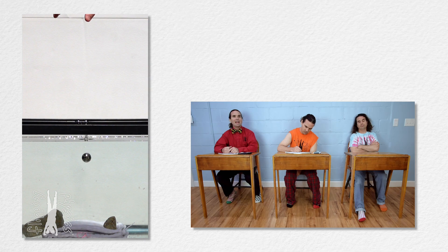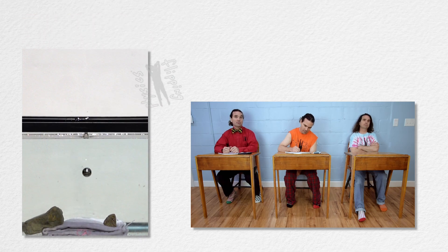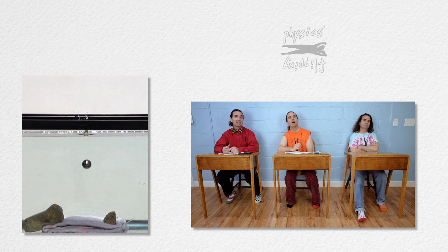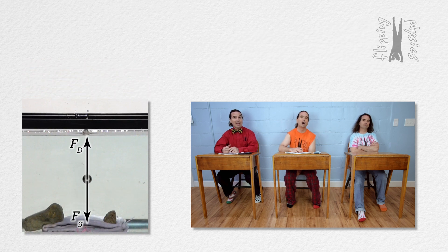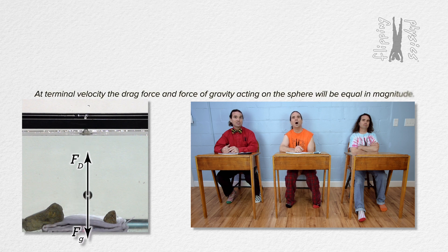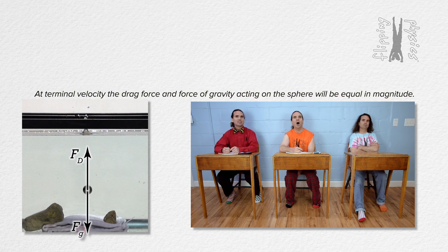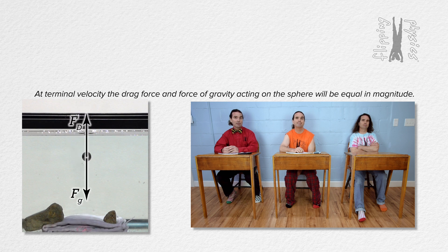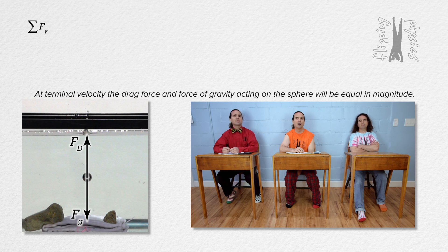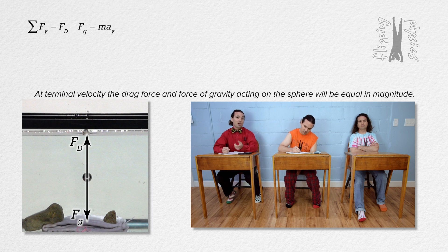Please start with the free body diagram of the forces acting on the steel sphere and then solve for its drag coefficient. As the steel sphere moves through the water, the force of drag acting on the steel sphere acts upward and the force of gravity acts downward. At its terminal velocity, those two forces are equal in magnitude and the acceleration of the steel sphere is zero. We can show that by summing the forces in the y direction: force of drag minus force of gravity equals mass times acceleration in the y direction. The acceleration in the y direction at terminal velocity equals zero, so the force of drag and the force of gravity are equal in magnitude.